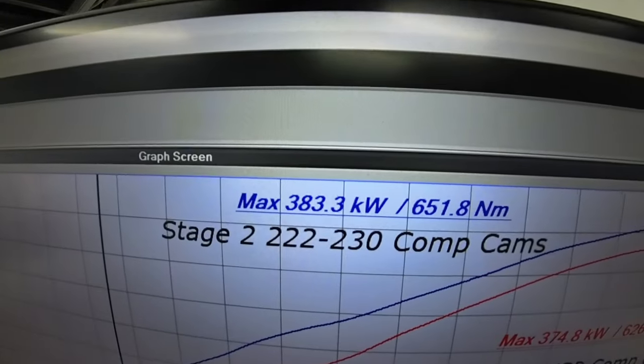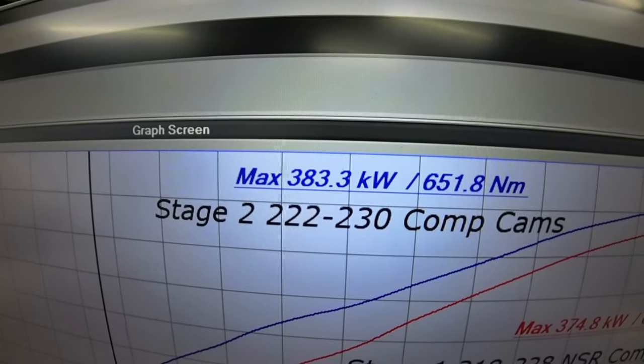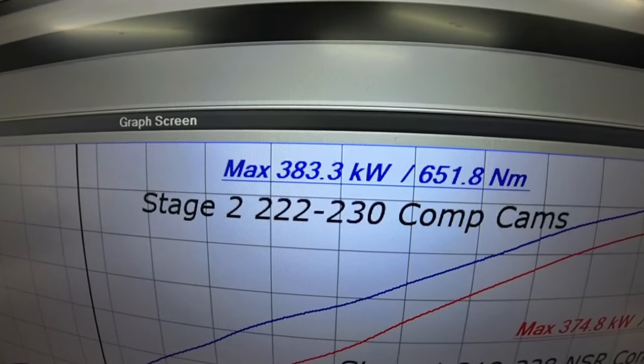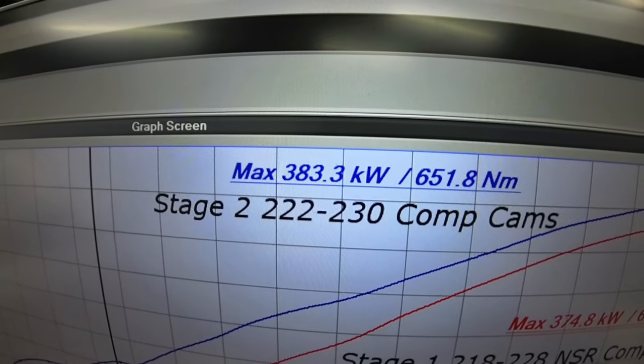Now with the Stage 2, it's a 222-230 comp cam and it's now 383 kilowatts, 651 newton metres.